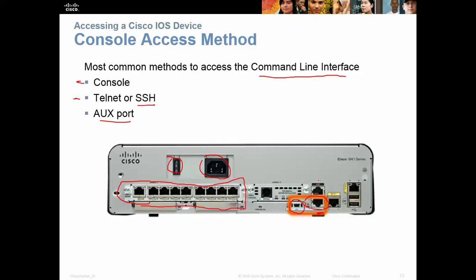You also have your aux port, then your gigabit ports where you can set up Telnet or SSH. Initially, you have to have physical access to the switch or router and console in, because you don't have anything set up on the device yet — you have to set up Telnet and IP addresses. You have to use a console connection, either by USB or by the RJ45 Ethernet.